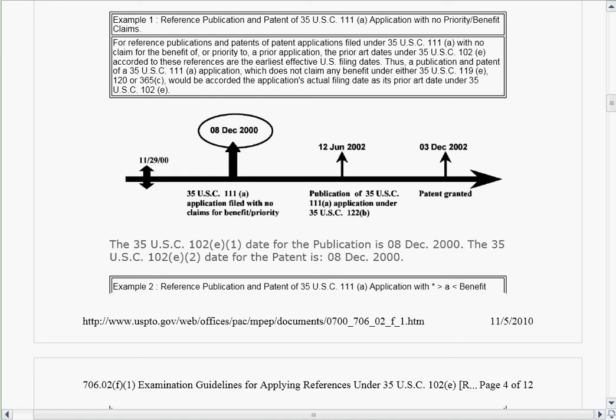Thanks for stopping by. This is Dan Bell of Bell Certified. Today we're speaking about MPEP 706.02F1. There's nine examples that we're covering, and we're looking at how 35 USC 102E(1) and (2) are applied under both the new and the old versions of 102E.